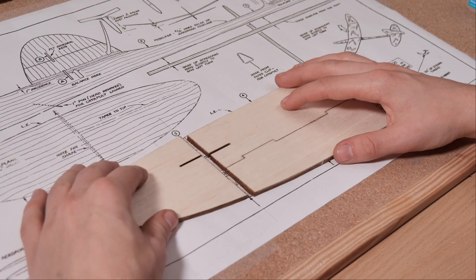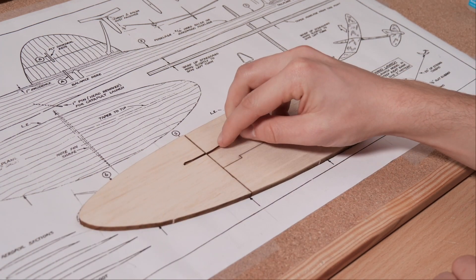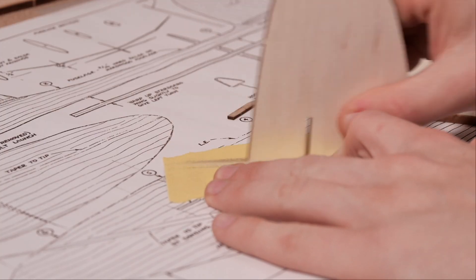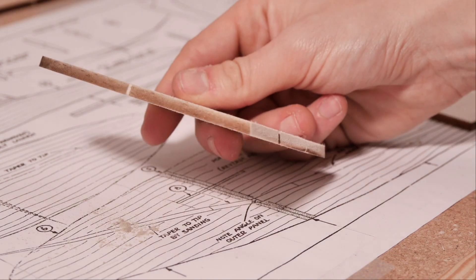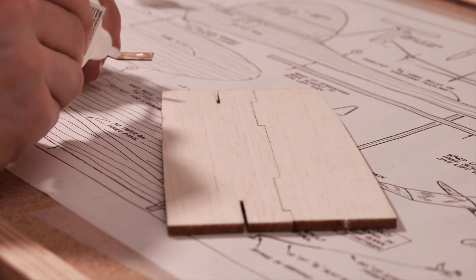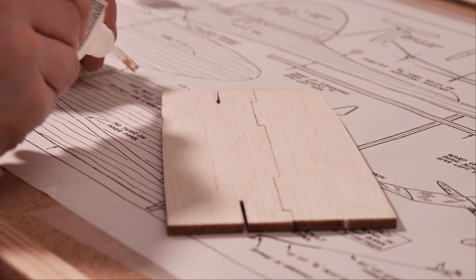When joining the wings, you'll need to use some sandpaper to bevel the edges to the same angle as the ply dihedral spar. Take your time here and sand lightly. Next, you can add glue and join the wing slab. It's really quite straightforward.